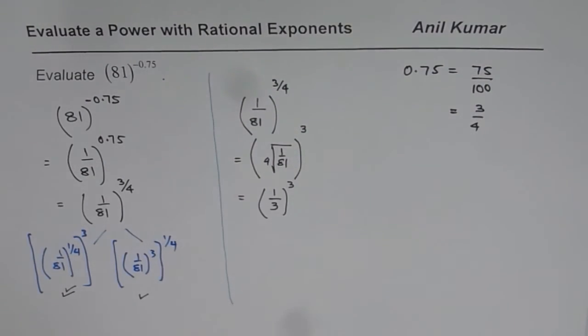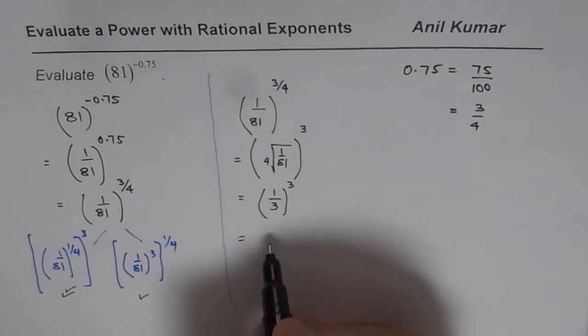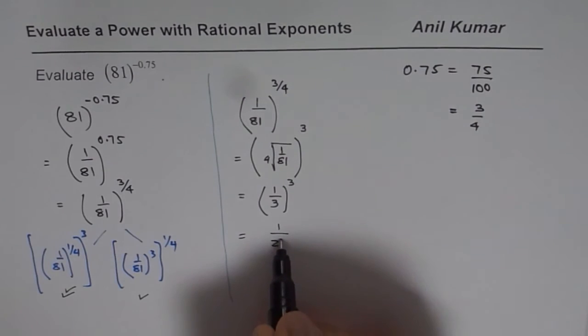So 1 over 3 whole cube. 81 is in the denominator. So 3 comes in the denominator. And now cube of 3 is 27. So 27 comes in the denominator.